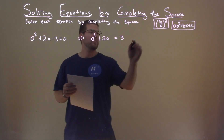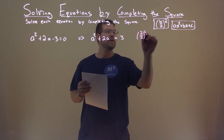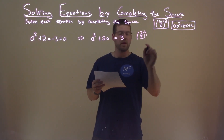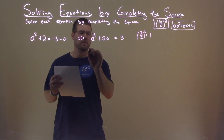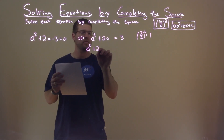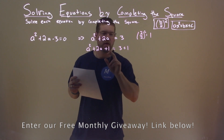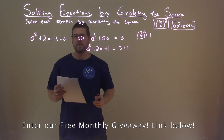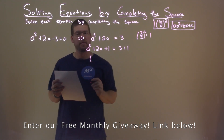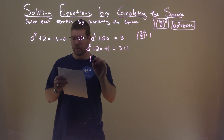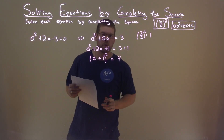Now we have to look at our B value, which is 2. We use a formula: 2 divided by 2, and we square that, which comes out to be 1. So with that information, we say A squared plus 2A plus 1 equals 3 plus 1. We're going to add a 1 to both sides of the equation. That allows us to write the left-hand side as a perfect square — that is, A plus 1, all squared, is equal to 4.